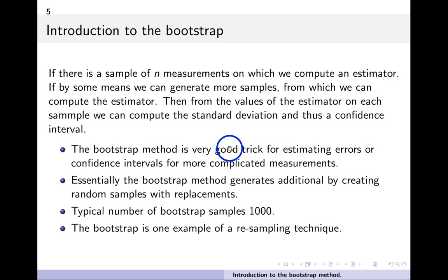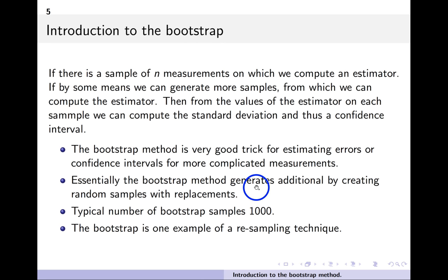The bootstrap technique is essentially a trick for estimating errors and confidence intervals. Instead of collecting new data, you take your original sample of seven people and create new samples from it — for instance by splitting it into groups of three and four. The bootstrap generalizes this: it takes the original dataset and creates random combinations by resampling from the original numbers to generate new samples. You compute the estimator on each new sample, repeating typically around a thousand times. This is called a resampling technique.